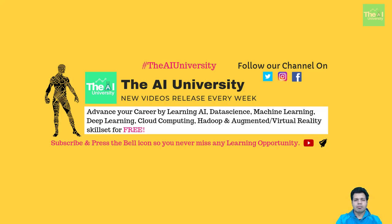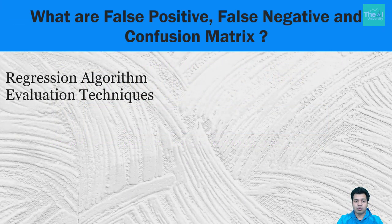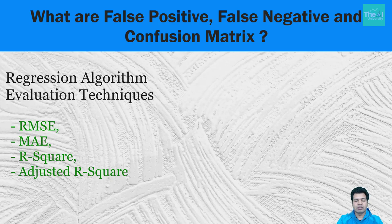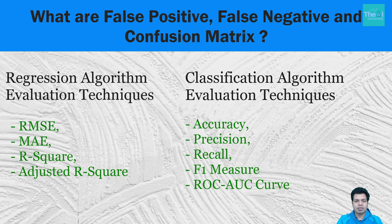When we build and train our machine learning models, it's equally important to evaluate them so that we can find out if our model is accurate or not. We evaluate the regression family of algorithms using techniques like root mean square error, mean absolute error, R-squared, and adjusted R-squared. But when it comes to classification algorithms, we use techniques like accuracy, precision, recall, F1 measure, and ROC curve.